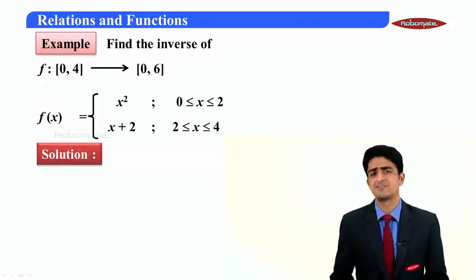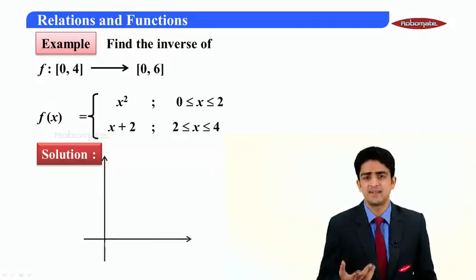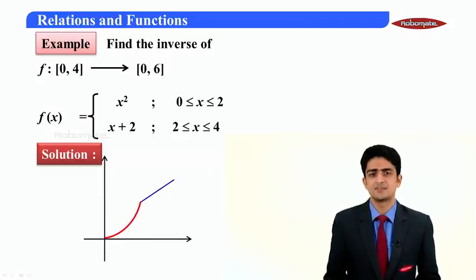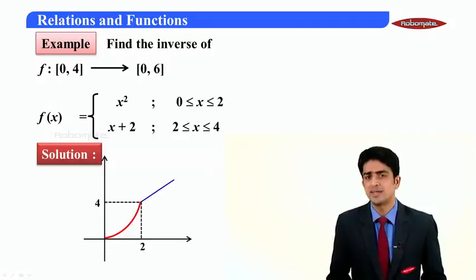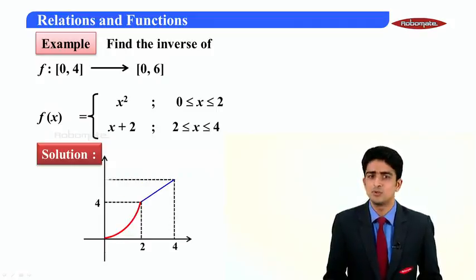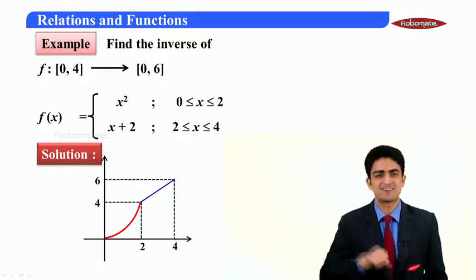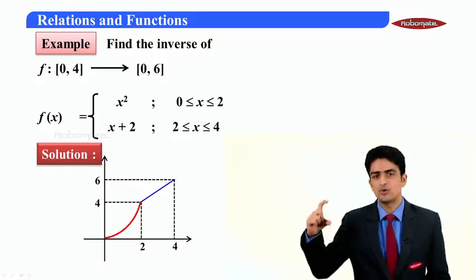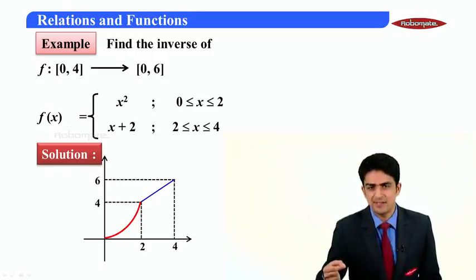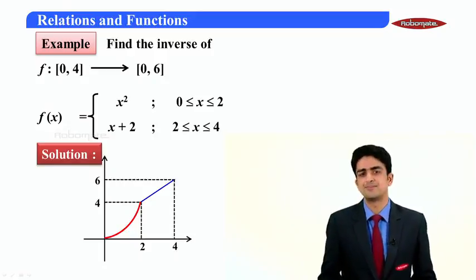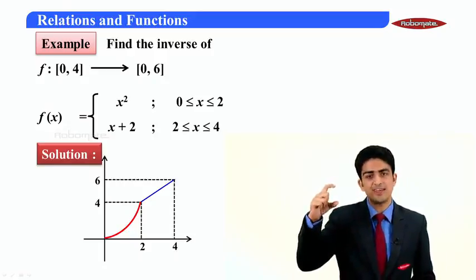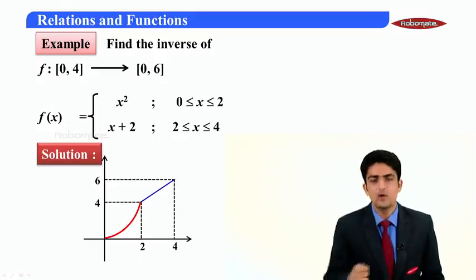Let me give you the graph of this function so that you get a better idea. The graph looks like this: from 0 to 2 it's x², from 2 to 4 it's x+2. Now how do we backtrack? For 0 to 4 backtracking will be done by red curve and from 4 to 6 backtracking will be done by blue line.